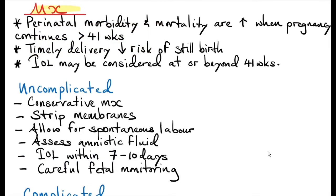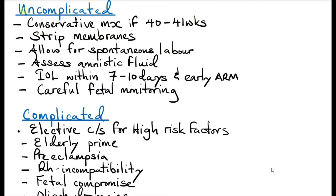Management of post-term pregnancy: perinatal morbidity and mortality are increased when the pregnancy continues beyond 41 weeks, so timely delivery reduces the risk of stillbirth. Induction of labor may be considered at or beyond 41 weeks gestational age. For uncomplicated post-term pregnancy between 40 to 41 weeks with adequate amniotic fluid and no signs of fetal compromise, you can do conservative management — stripping the membranes and allowing for spontaneous labor, giving the patient about 7 to 10 days. However, if spontaneous labor has not occurred within that time, admit for induction of labor and rupture the membranes early in labor to monitor the amniotic fluid.